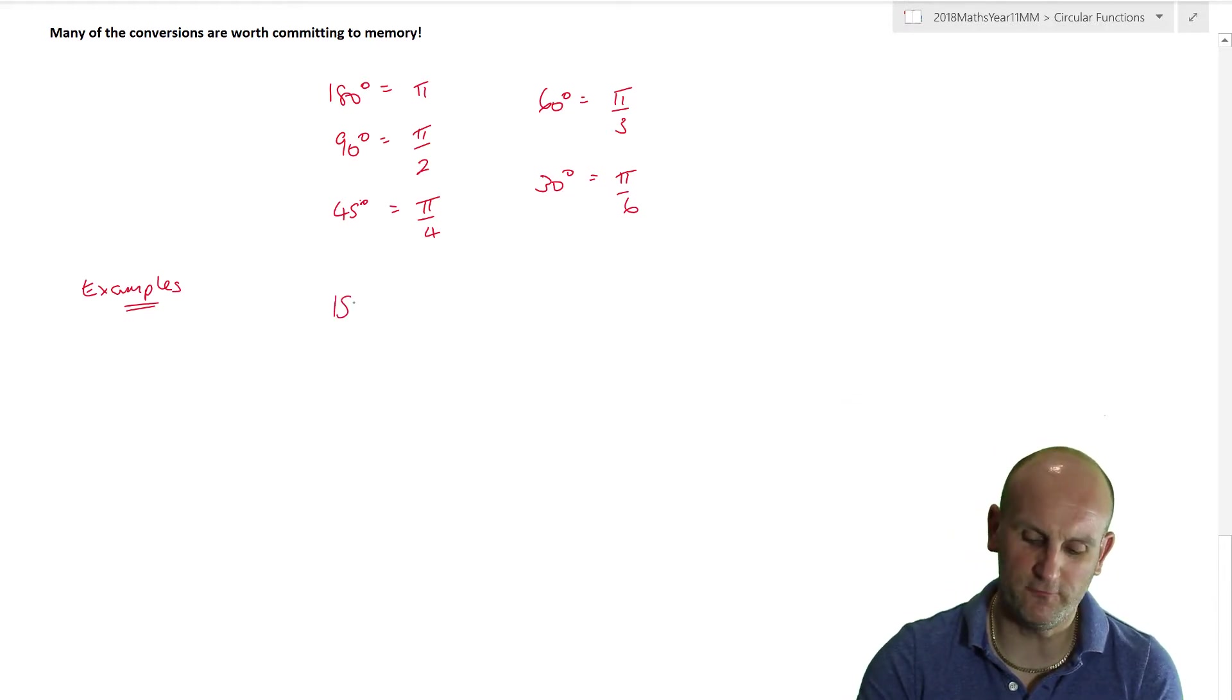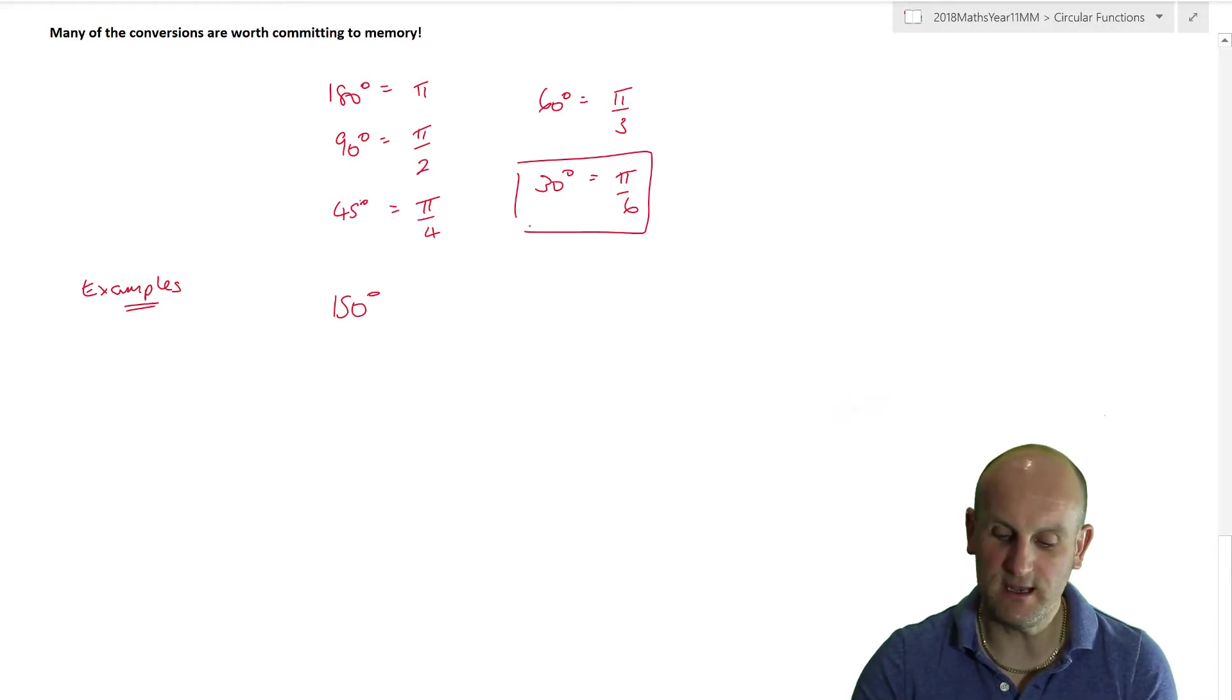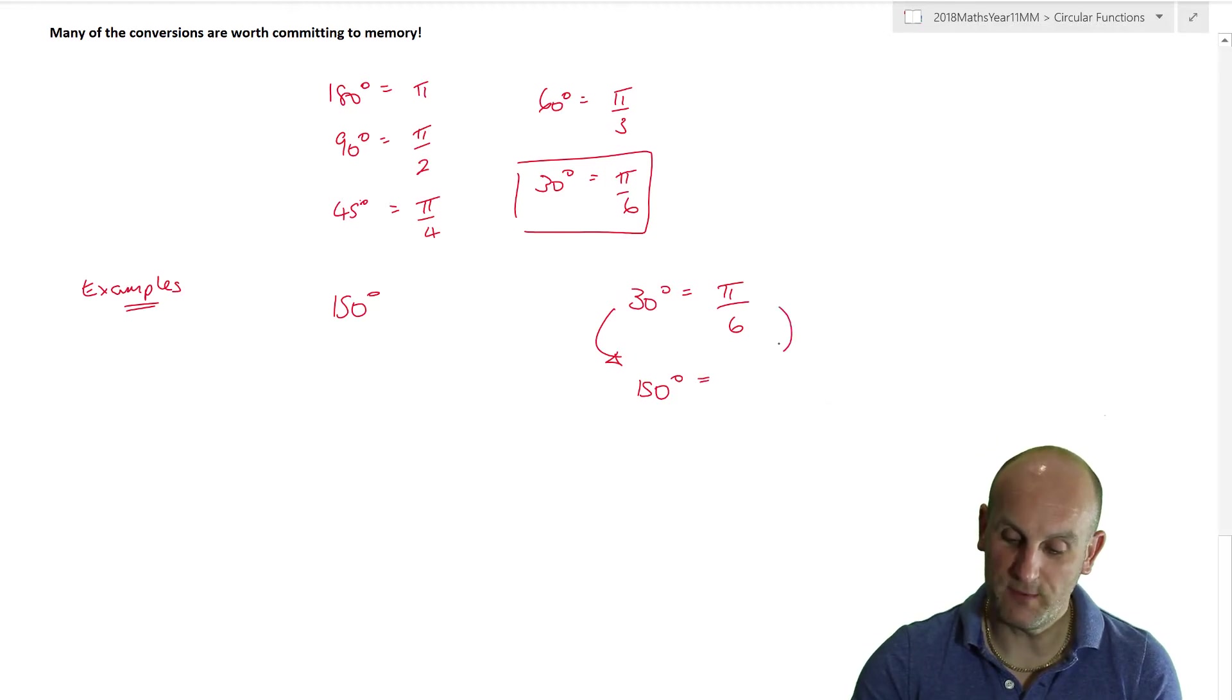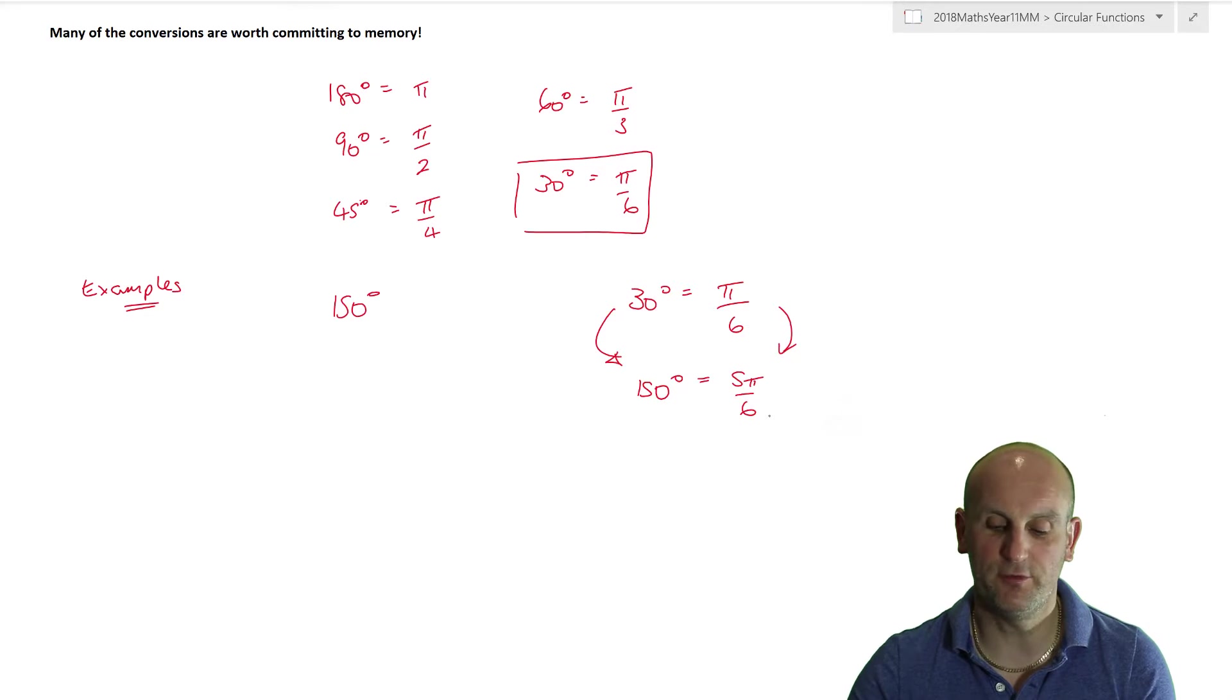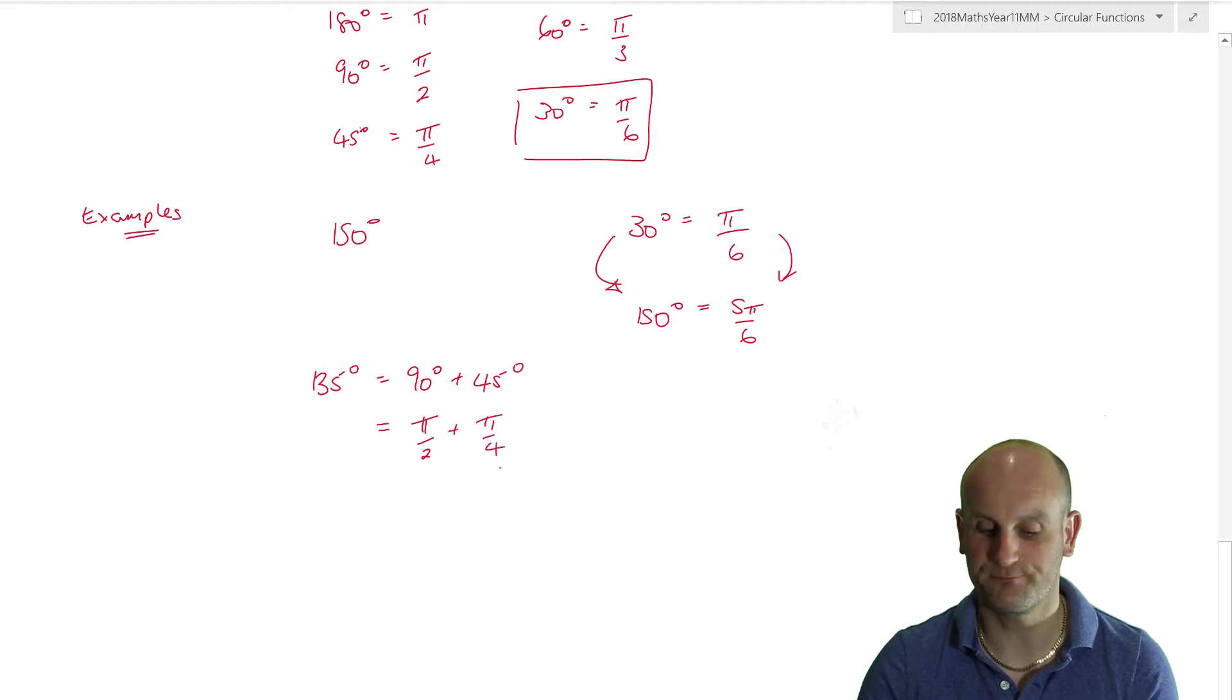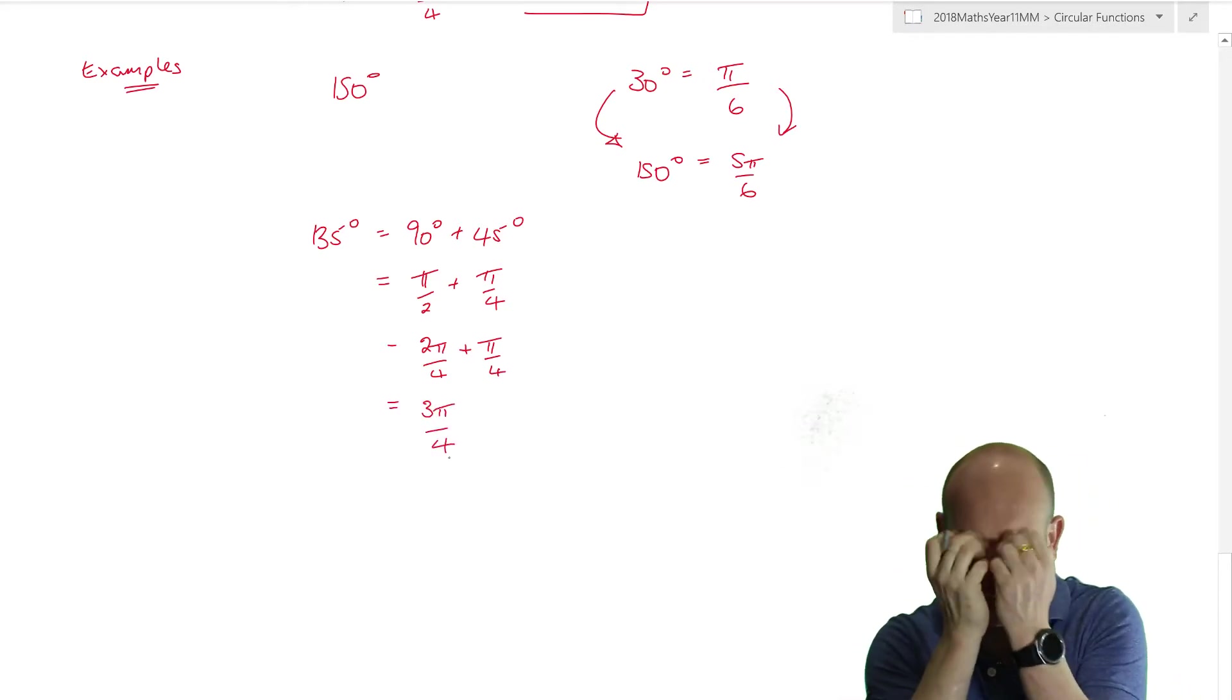For example, if I wanted to write 150 degrees in radians, how am I going to do that? Well, I'm going to use this one here. Why? Because I know that 30 degrees is pi on 6. It's easy to go from 30 degrees to 150 degrees simply by timesing by 5. So if I multiply that side by 5, I have to multiply that side by 5 and I get 5 pi on 6. So 150 degrees is 5 pi on 6. What about 135 degrees? Well, that's the same as 90 degrees and 45 degrees, which is equal to pi on 2 plus pi on 4. So pi on 2 plus pi on 4, that's the same as 2 pi on 4 plus pi on 4, which just so happens to give me 3 pi on 4.